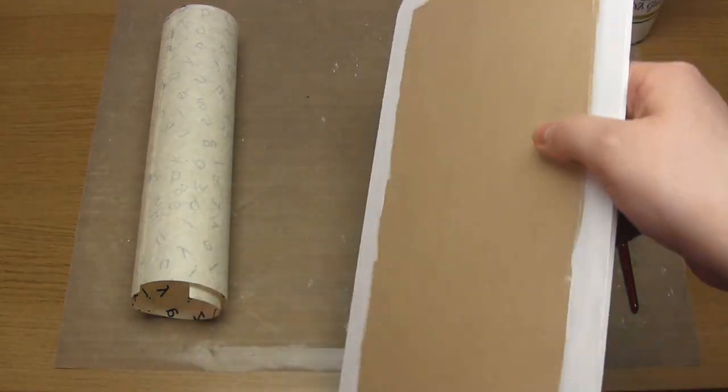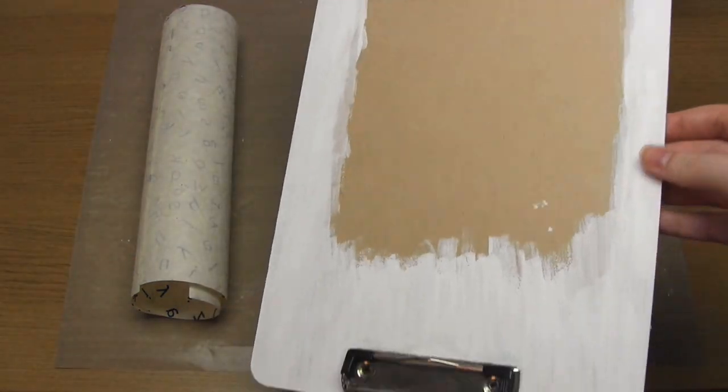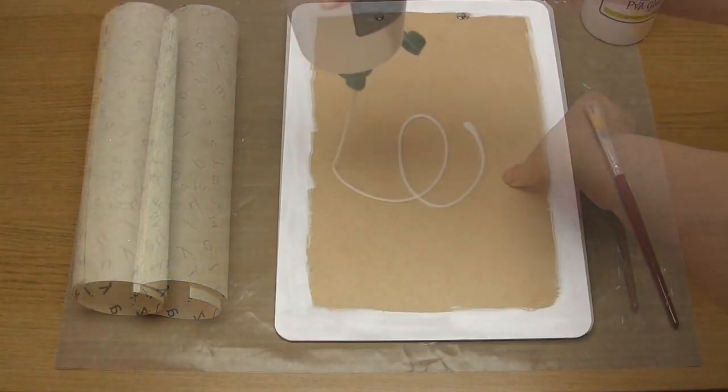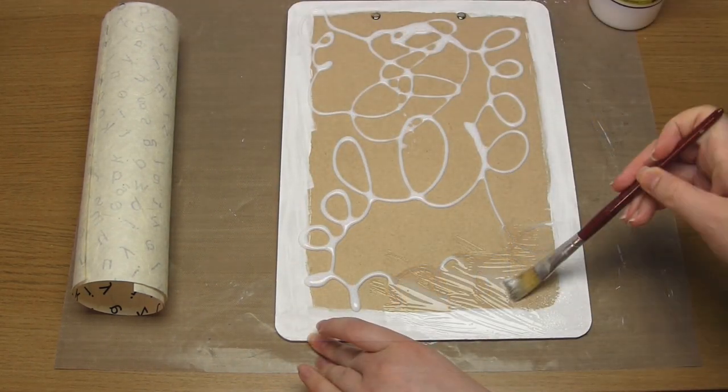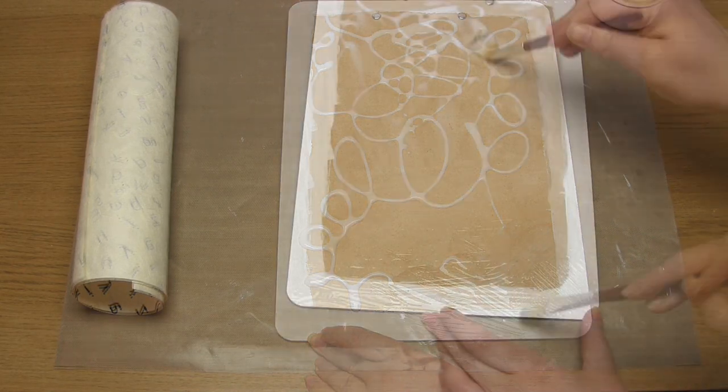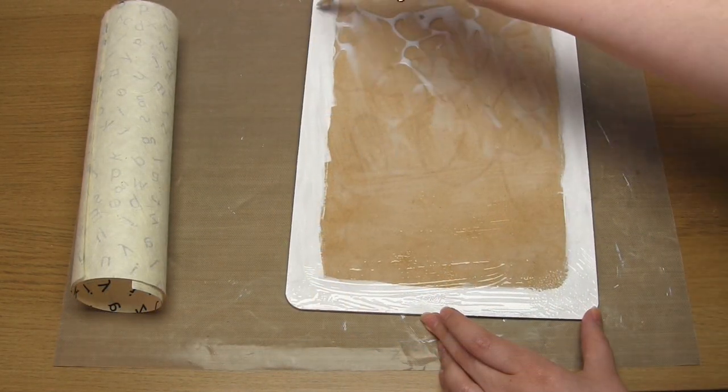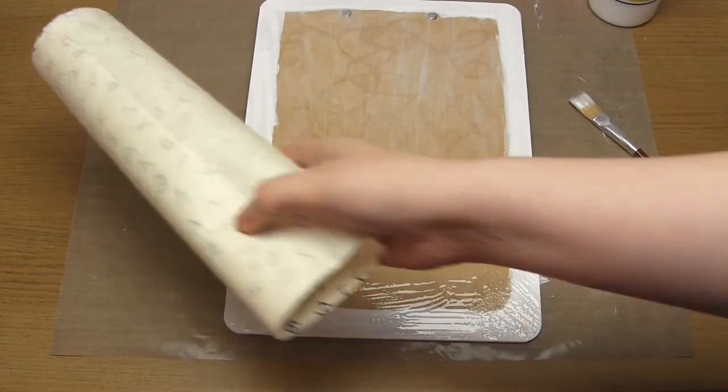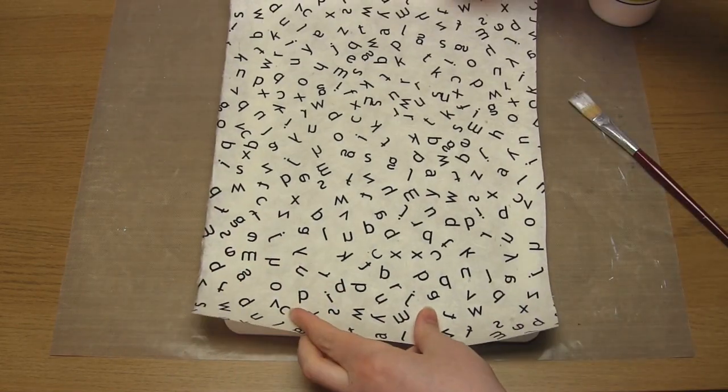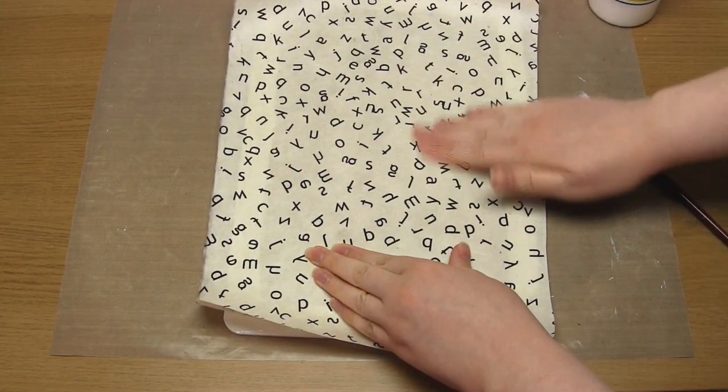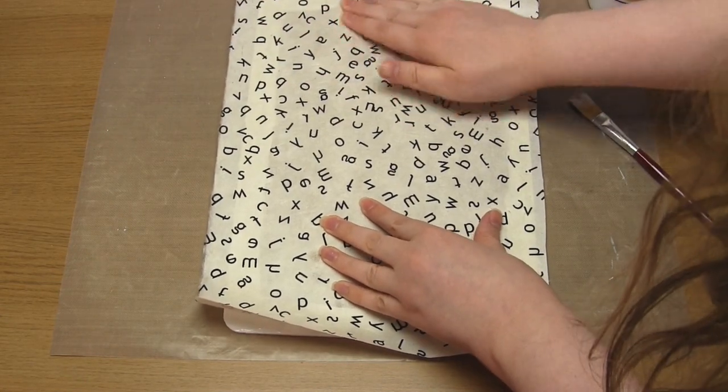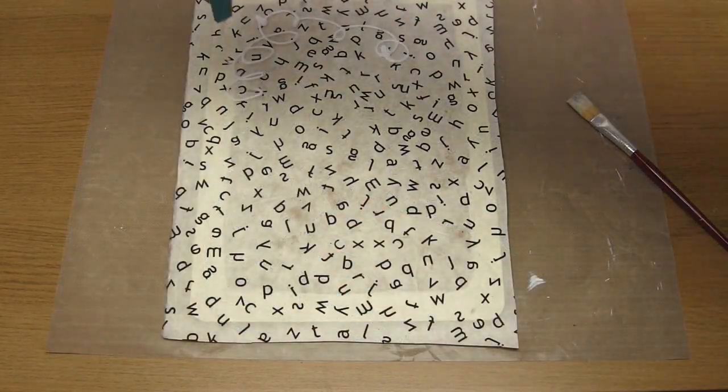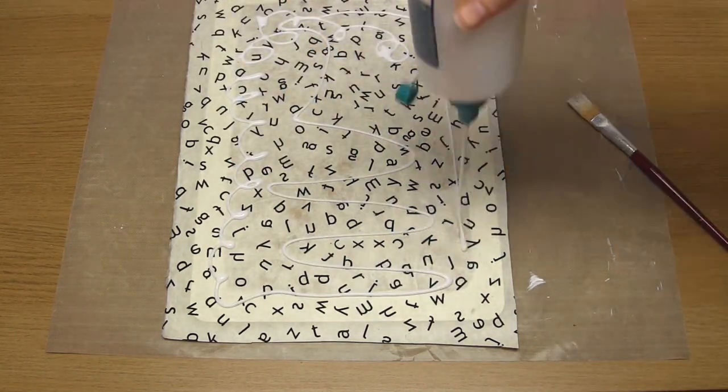Next, I cut out a sheet of decorative paper and decoupaged it onto the back of the clipboard. In other words, I just applied a thin layer of PVA glue all over the wood, placed the paper on top and pressed it down all over, and then covered the paper with another thin layer of glue.